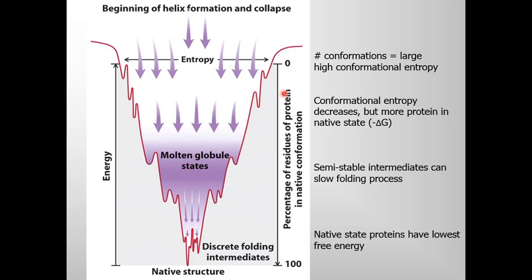As a protein folds, entropy drops. Remember, protein is folding in a system, so when the protein folds, the entropy of the system increases whereas the entropy of the protein decreases. The reason why delta G becomes negative is because the protein is heading towards its native structure, which is the lowest energy conformation, and the entropy of the system increases. That leads to a decrease in free energy change — everything that leads to the native structure involves decreased free energy.